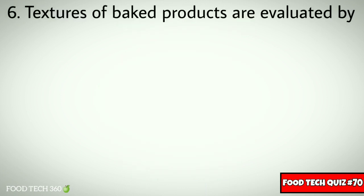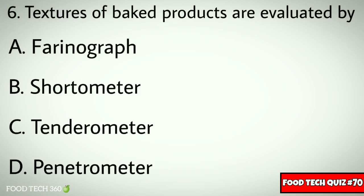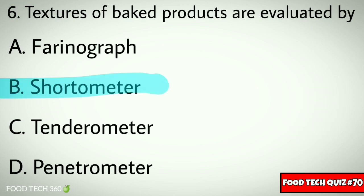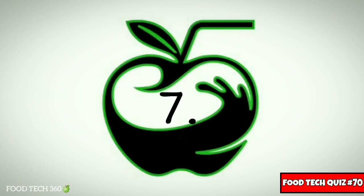Q6. Textures of baked products are evaluated by dash. Options: A. Farinograph, B. Shortometer, C. Tenderometer, D. Penetrometer. Correct answer: B. Shortometer.